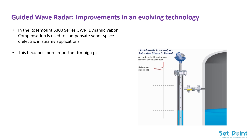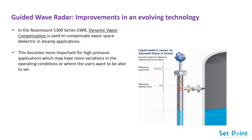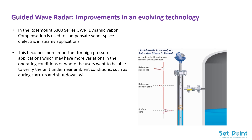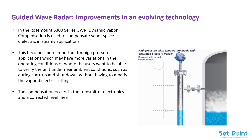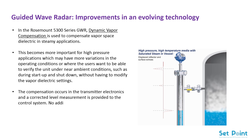This becomes more important for high-pressure applications which may have more variations in the operating conditions, or where users want to be able to verify the unit under near-ambient conditions such as during start-up and shut-down, without having to modify the vapor dielectric settings. The compensation occurs in the transmitter electronics and a corrected level measurement is provided to the control system. No additional compensation is required.